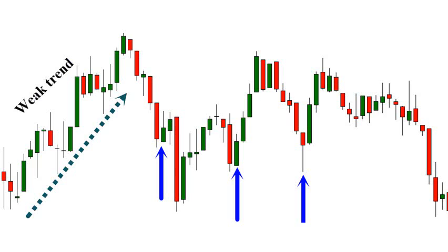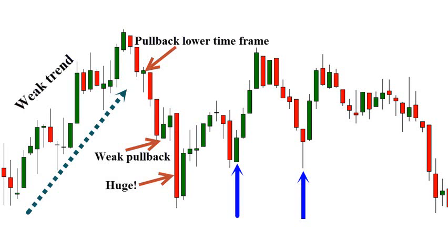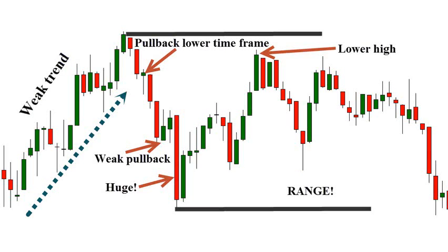I'd be so caught up in making huge profits trading the trend that I thought was in play, that I missed some obvious events. The trend was weak — there were a lot of doji candles, upper shadows, and the pullback off the top was pretty strong. There was also a hidden pullback on a lower time frame chart, shown by the first green candle after the high. There's a weak pullback showing very little buying pressure, and this huge bear candle. Price fails to make a higher high and effectively becomes a consolidated structure.